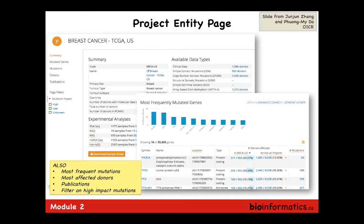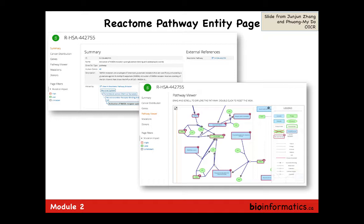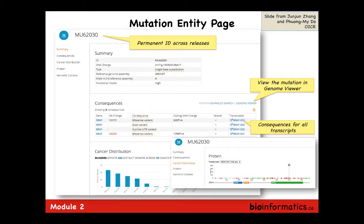If you drill down to a project, it tells you how many of the various data types are in that project. There's a gene page — if you drill down to a gene, you can look at it across all tumor types or in a specific tumor type. Since last year it includes a Reactome pathway, and on the last day of this workshop you'll have half a day on pathway analysis in Reactome. Each mutation — and there are millions of them — has a single identifier and is queryable, so you can look for the same mutation across multiple tumor types.